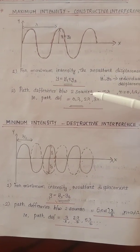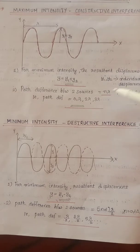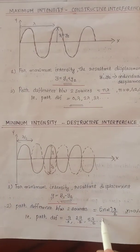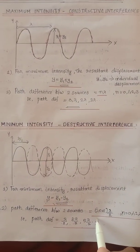To summarize: for constructive interference, the path difference is n·lambda. For destructive interference, the path difference is (2n + 1) times lambda by 2.